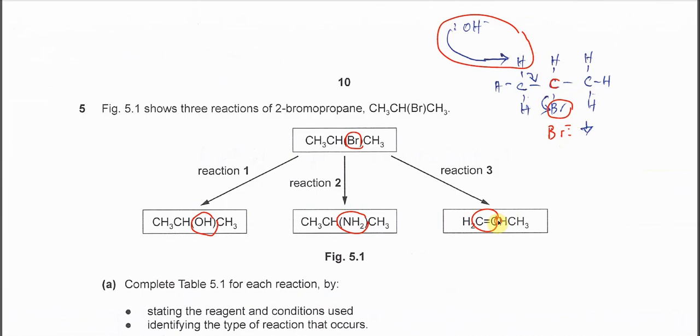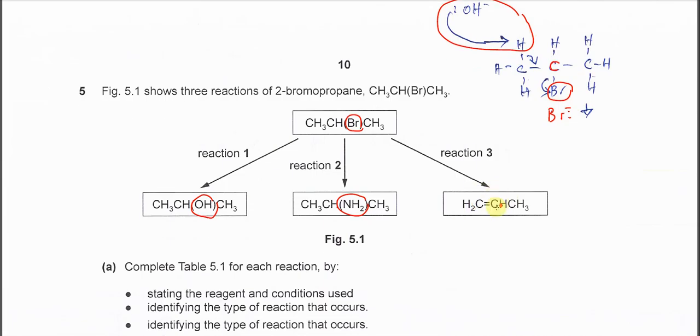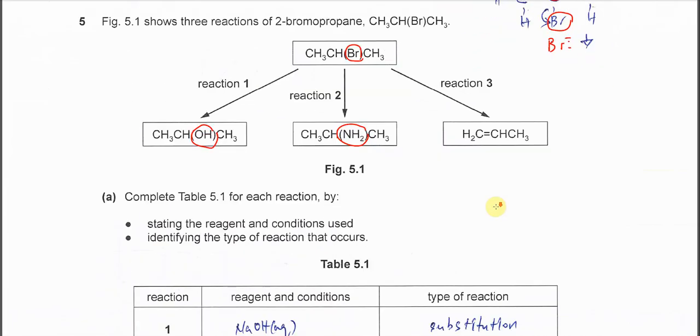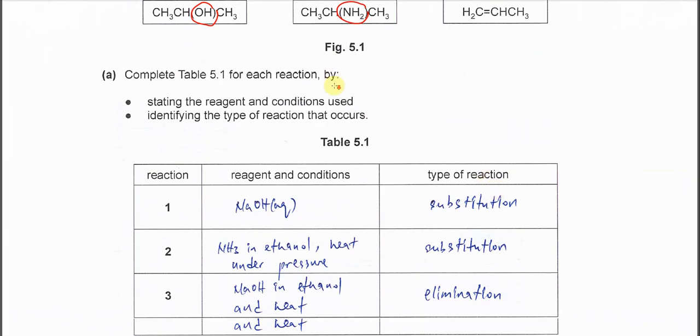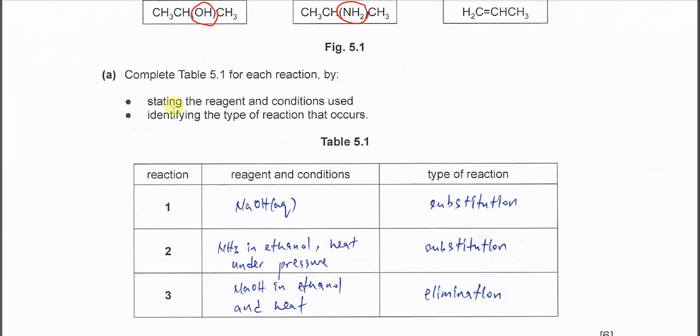After elimination it will form three products: H2O, bromide, and the alkene. In this case, the propene. Part A: Complete table 5.1 for each of the reactions, stating reagent and conditions and identifying the type of reaction as well.